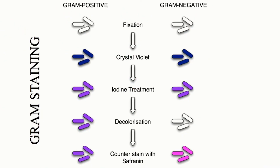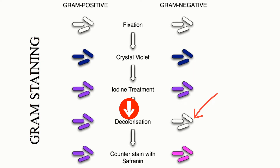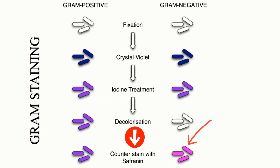In the final step, the red dye safranine stains the decolorized gram negative cells pink or red. To summarize visually: if you have both gram positive and gram negative bacteria, adding crystal violet dye turns both dark blue. Treating with iodine turns both purple. Using an organic solvent decolorizes the gram negative bacteria due to its thin wall, but the gram positive remains purple.